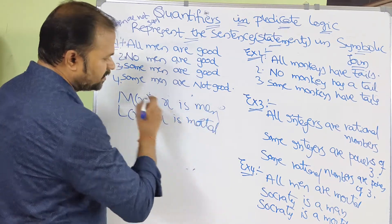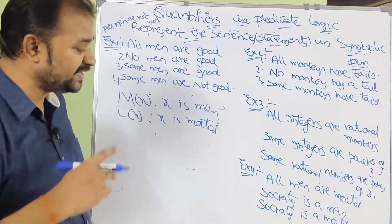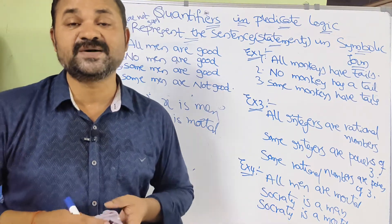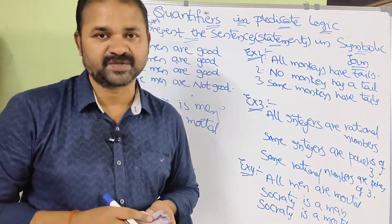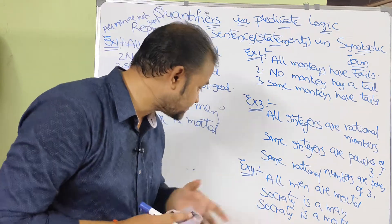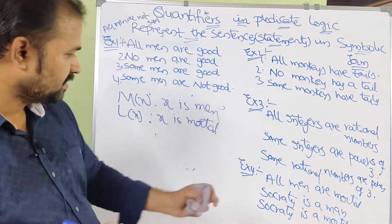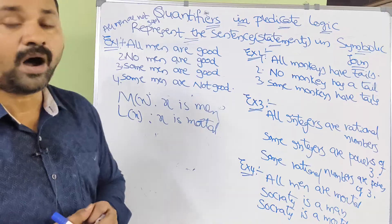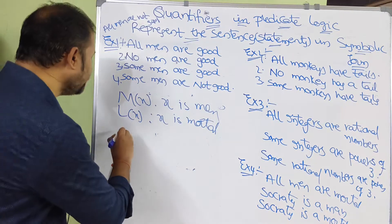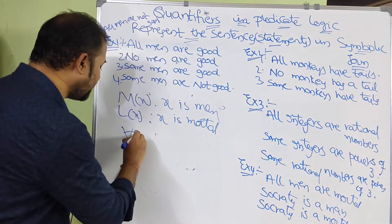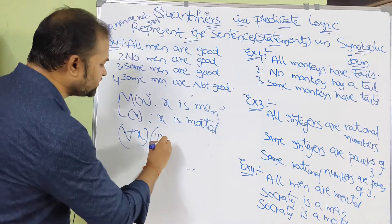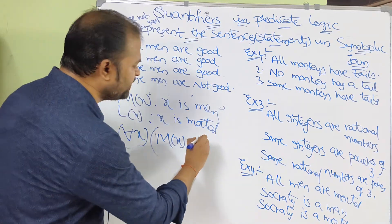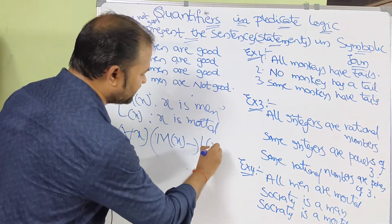Socrates is a subject here. First sentence: 'All men are mortal.' All means for all x — men means M(x), implies — mortal means L(x). So: ∀x(M(x) → L(x)).